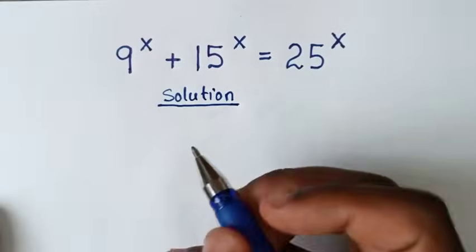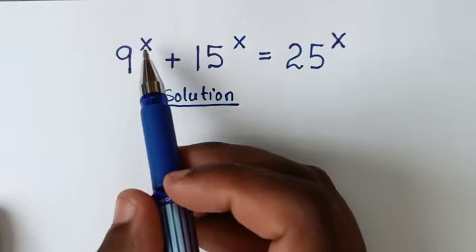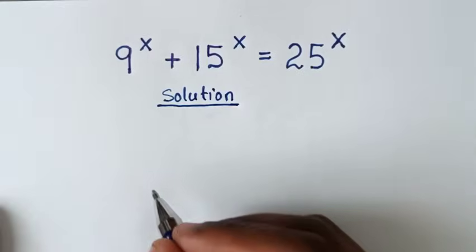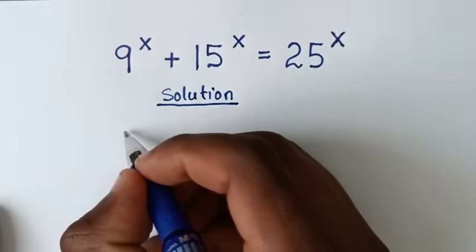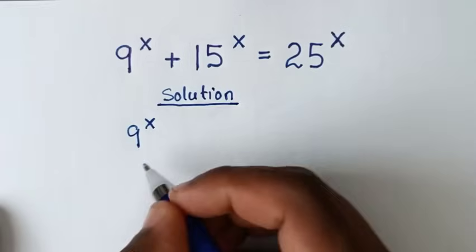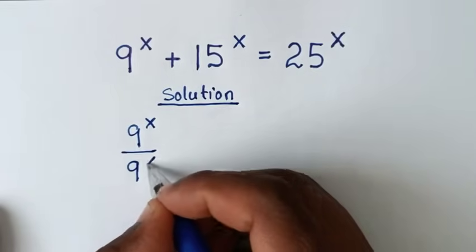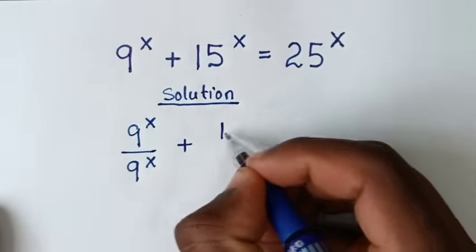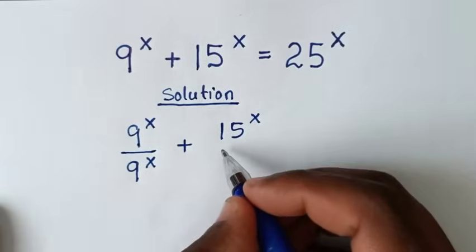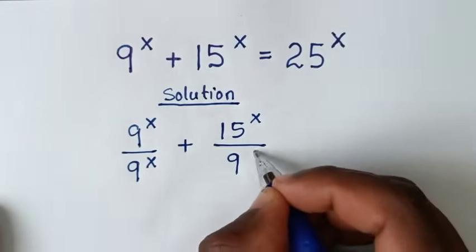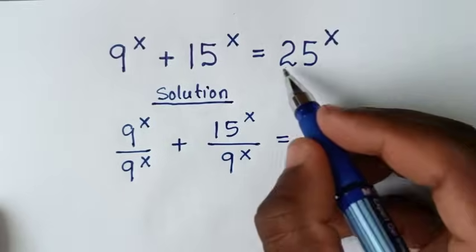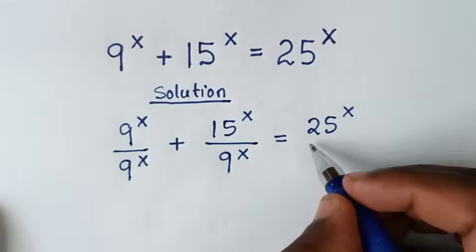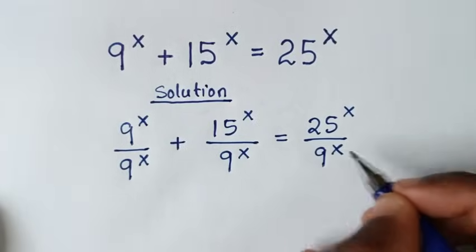In the first step, we will start by dividing with the smallest exponent, 9 power x, on both sides. So it will be 9 power x divided by 9 power x, plus 15 power x divided by 9 power x, is equal to 25 power x divided by 9 power x.